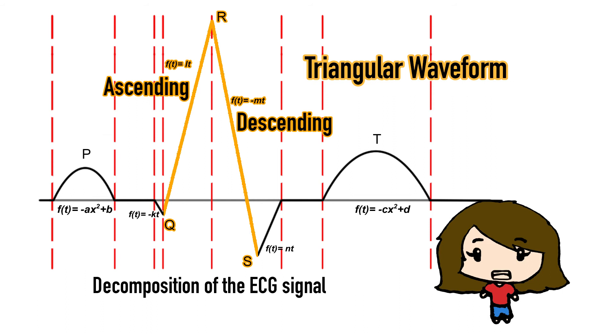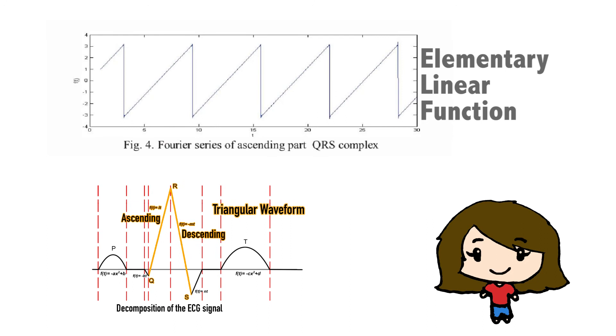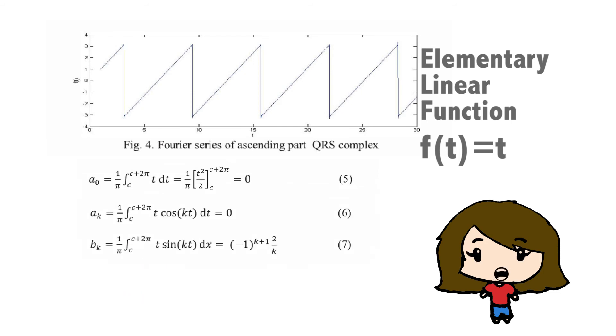For the ascending triangular waveform in the QRS complex, we use the elementary linear function, f(t) equals t and make it a periodical function. Again using Fourier series, we get the corresponding equation as shown in equation 8.